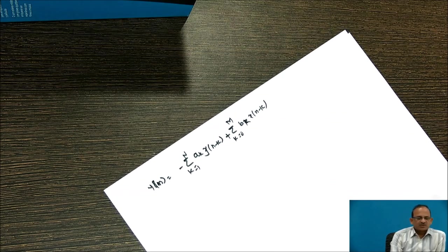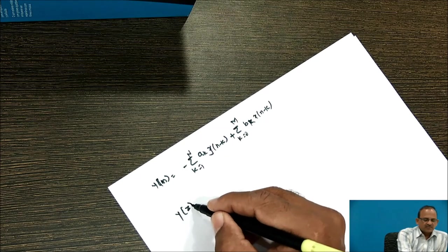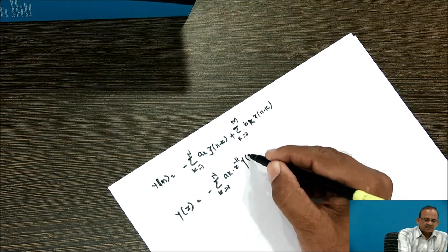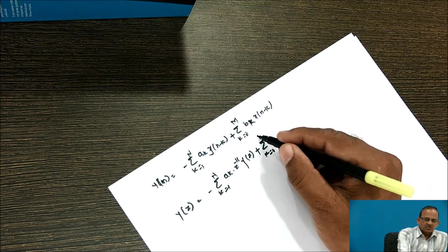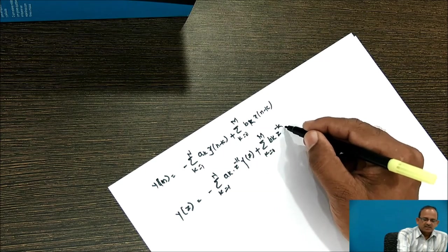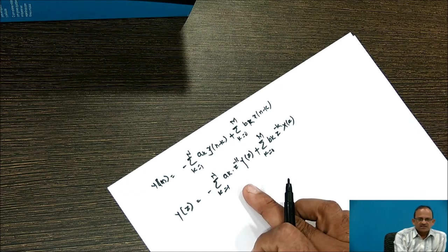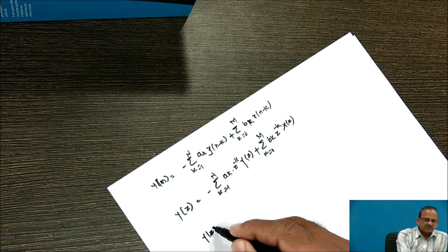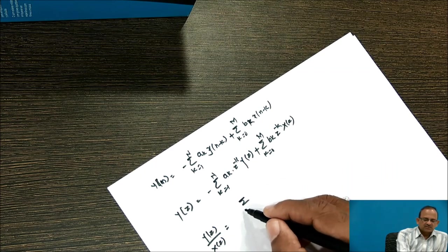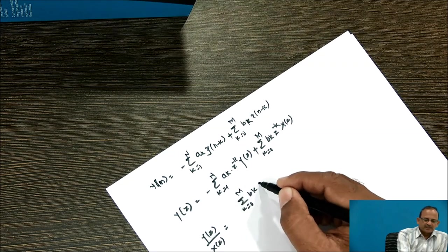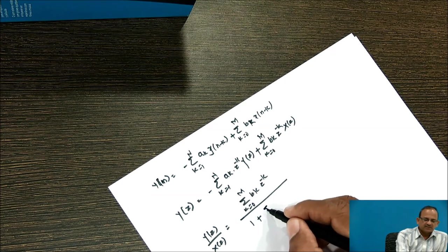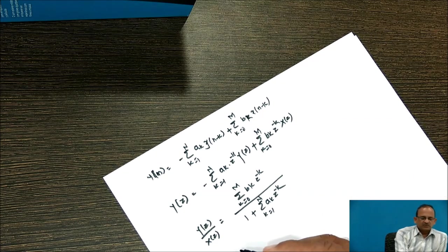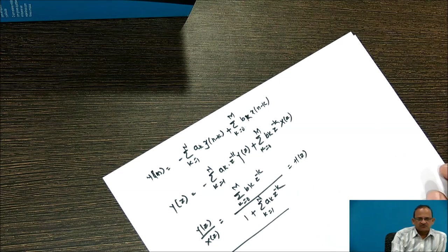Now consider this constant coefficient difference equation. Taking the Z-transform, we get Y(z) = summation k=1 to N of a_k·z^(-k)·Y(z) plus summation k=0 to M of b_k·z^(-k)·X(z). Taking the Y(z) term to the left-hand side and forming the ratio Y(z)/X(z), we get the transfer function: H(z) = Y(z)/X(z) = [summation k=0 to M of b_k·z^(-k)] / [1 + summation k=1 to N of a_k·z^(-k)]. This is the transfer function for an IIR system.